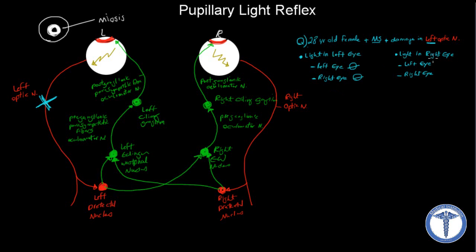Now what if we shine the light into the patient's right eye? This eye is normal because the question only mentioned the left optic nerve. Since the right optic nerve is normal, the signals are going to be sent from the retina to the right pre-tectal nucleus, and then we're going to have both pathways, which will end up contracting both sphincter muscles of both eyes, leading to constriction of both the left eye and the right eye.